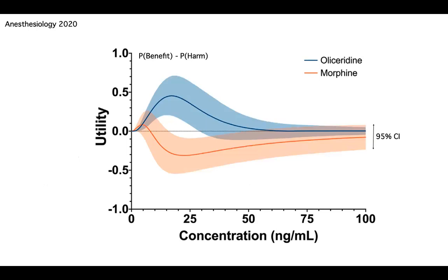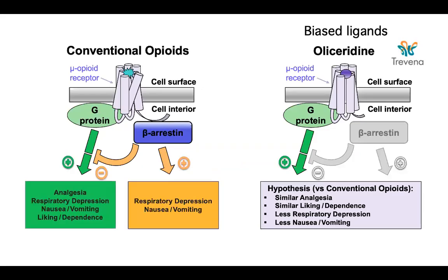One of those drugs is oliceridine. We published this a few years ago in anesthesiology, in which we show that compared to conventional opioids, the utility of oliceridine is positive. Why is that? We claim it has to do with the fact that conventional opioids interact with two intracellular pathways — the G-protein coupled pathway and the beta-arrestin coupled pathway — while oliceridine has a bias towards the G-protein pathway. In my opinion, that reduces the likelihood of a respiratory depression event.